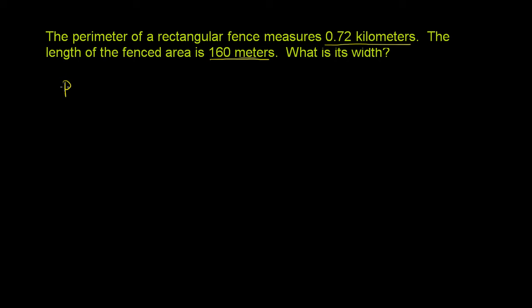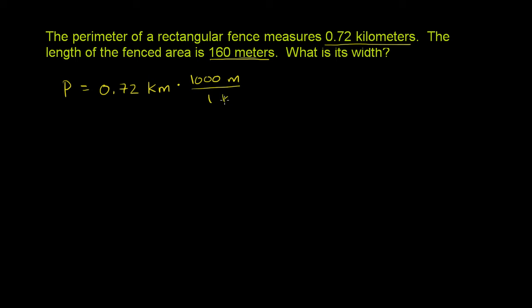So we have the perimeter — I'll just represent that with a P — is equal to 0.72 kilometers. The prefix "kilo" means 1,000 meters. And so we can say that for every 1 kilometer, we have 1,000 meters per every 1 kilometer.